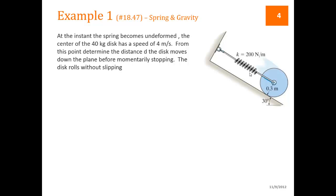So the disc rolls without slipping, so that gives us some information about the relationship between the speed of the center of mass and the rotational speed of the disc. We are going to apply T1 + V1 = T2 + V2. We know that at the final position the disc is not moving, so T2 is equal to zero in the final position.